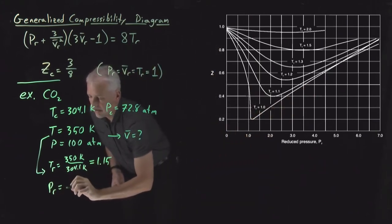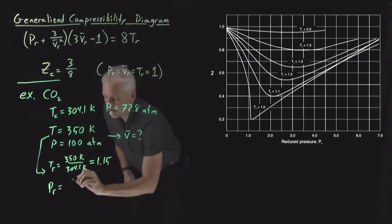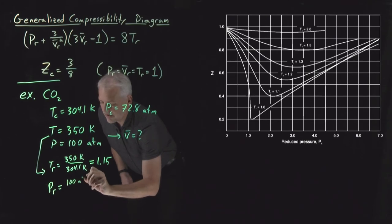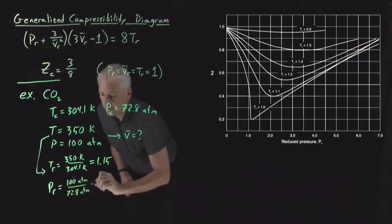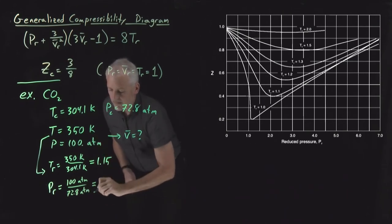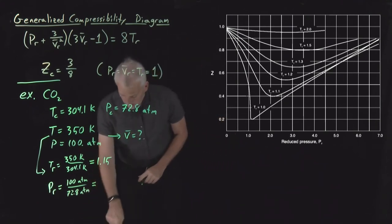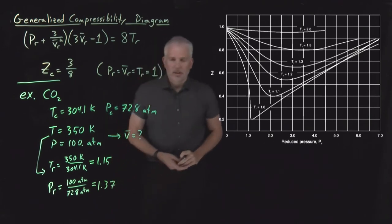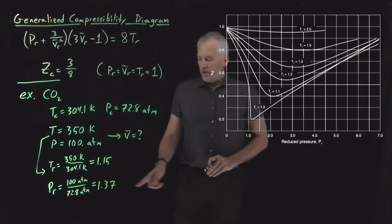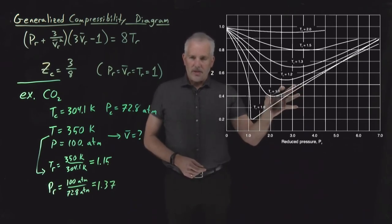Likewise, the pressure, the reduced pressure is actual pressure divided by the critical pressure, 100 atmospheres over 72.8 atmospheres. And if I imagine that I know that to a few sig figs, we can calculate that ratio 100 divided by 72.8. That works out to be 37% above the critical pressure. So that's enough information for me to find where I am on this generalized compressibility diagram.